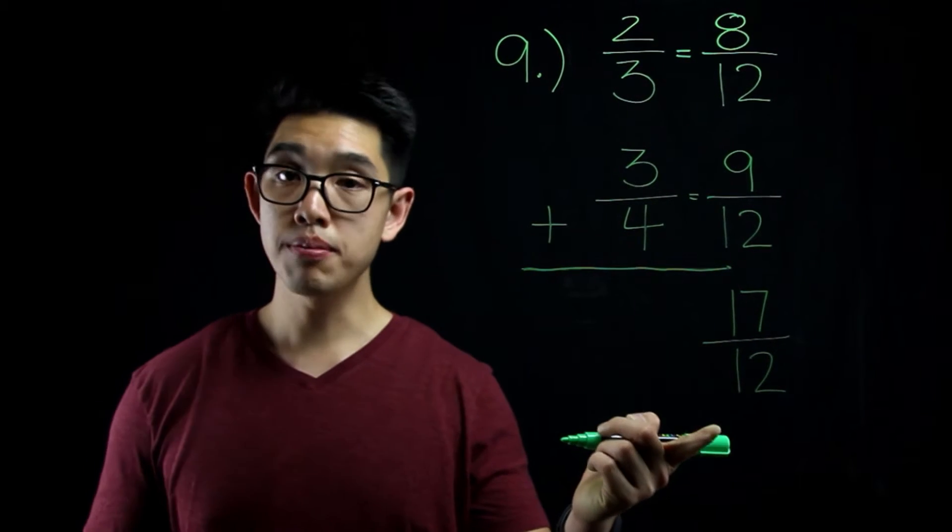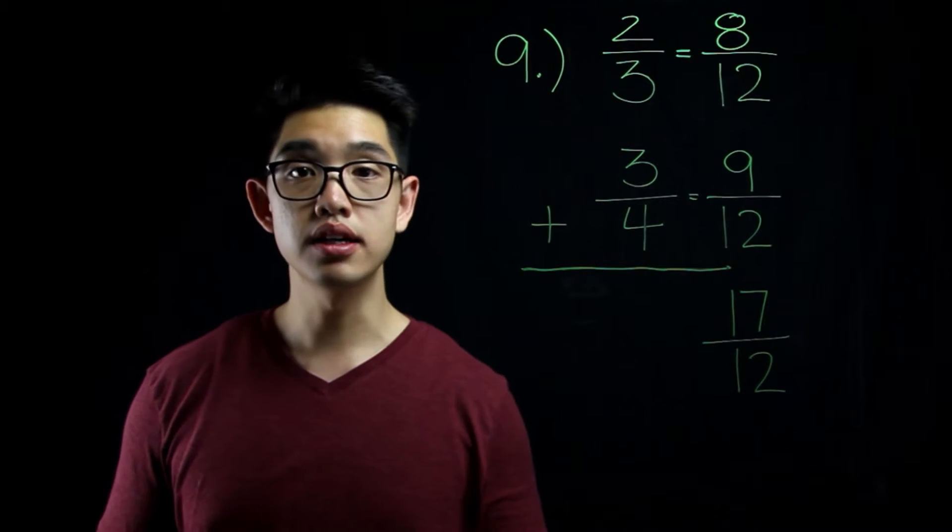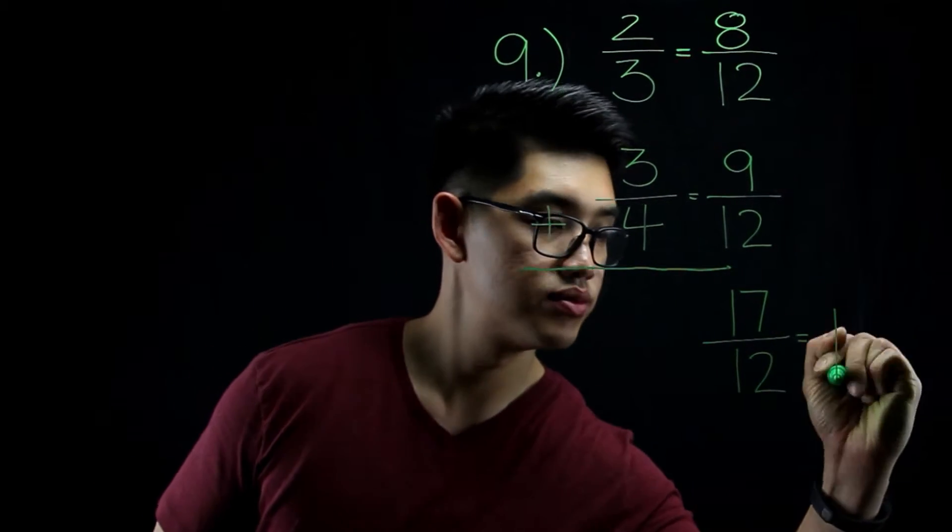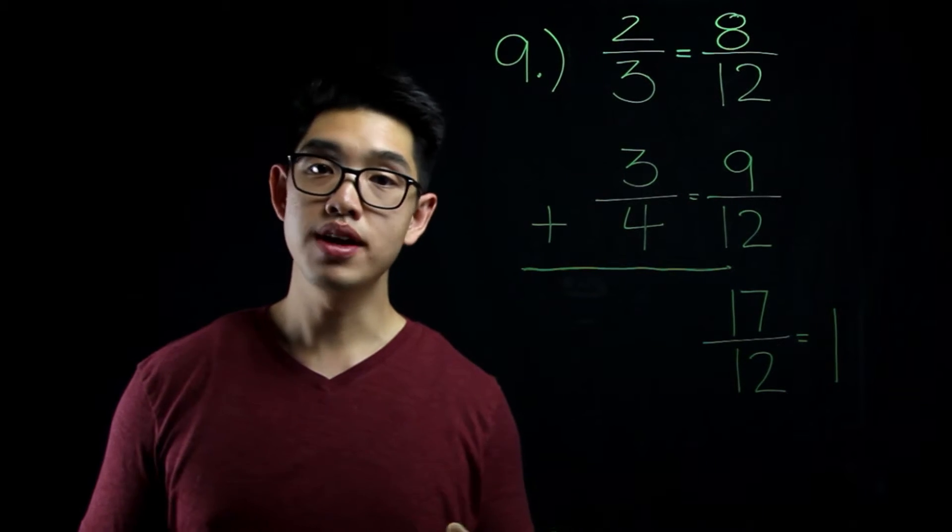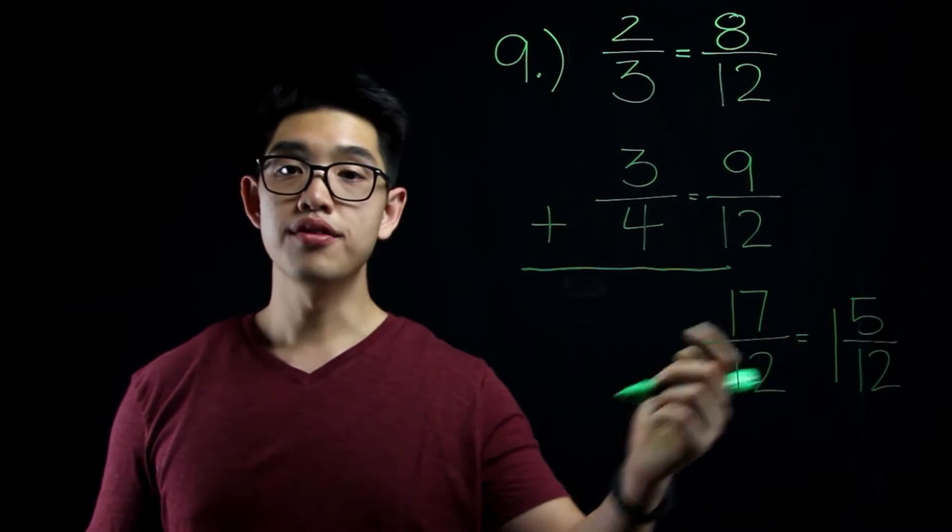Since the answer is an improper fraction, I can make it into a mixed number. 12 goes into 17 one time, with 5 as a remainder. So your answer is 1 and 5 twelfths.